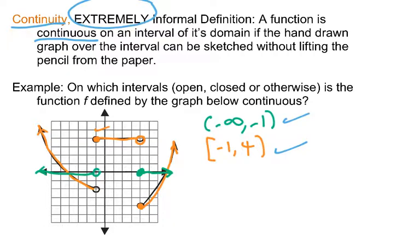So this graph, or this function, is continuous on negative infinity to negative one, not including negative one, negative one to four including negative one, and then finally also from four to infinity, including the four. Continuous there too.